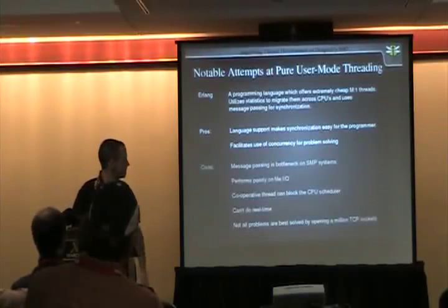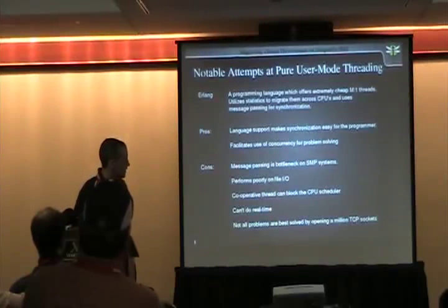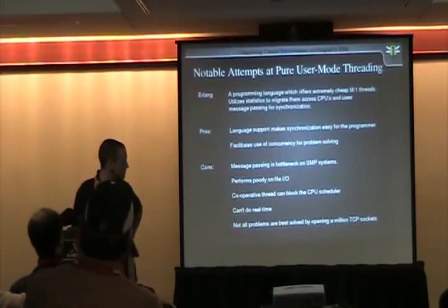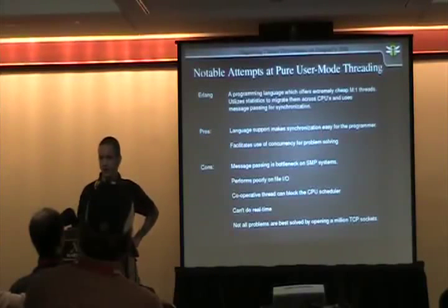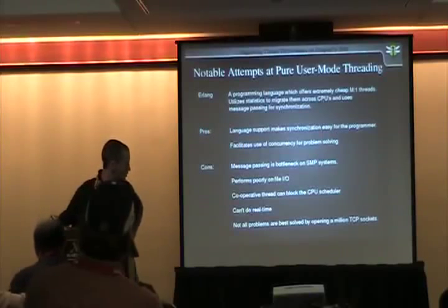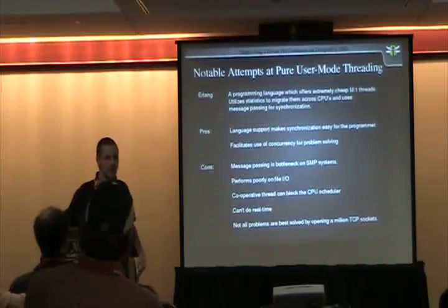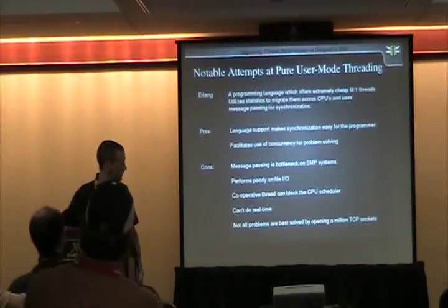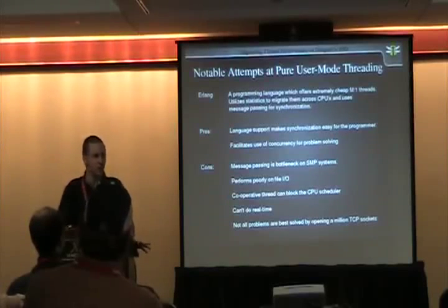Airline has several cons. Message passing doesn't work very well because you have to send very large traffic between processors, and there's no way to use shared memory. It doesn't work well on heavy file I/O. With cooperative threads, if one thread is blocked, the entire process is blocked on that CPU. You can't do real-time because it's all in user-land. And not all problems are best solved by opening a huge number of TCP sockets and consuming all the RAM.